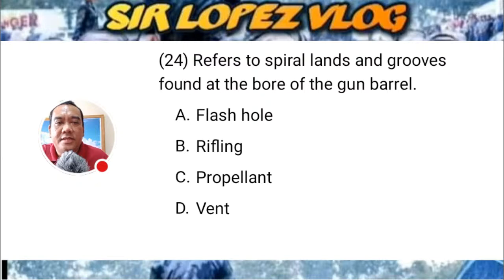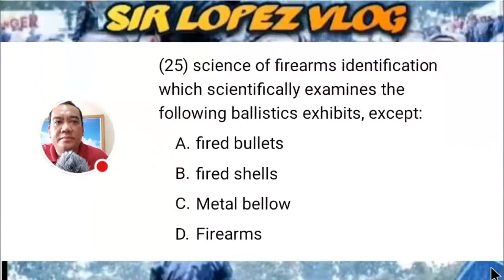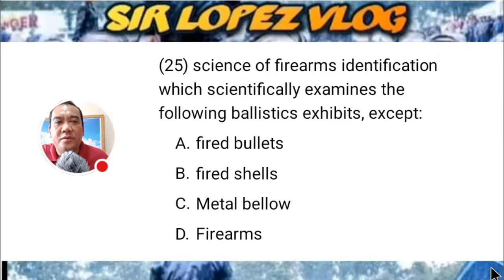Question number twenty-five: The science of firearms identification which scientifically examines ballistic exhibits, except: A) fired bullets, B) fired shells, C) metal bellow, or D) firearms?